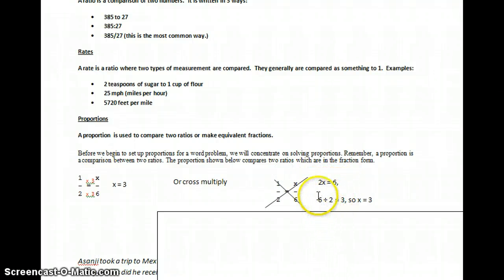Then when I solve it, I just do 6 divided by 2 gives me 3, so my x equals 3. So I can solve proportions both ways. A lot of times these numbers aren't super compatible, and cross-multiplying would work best.